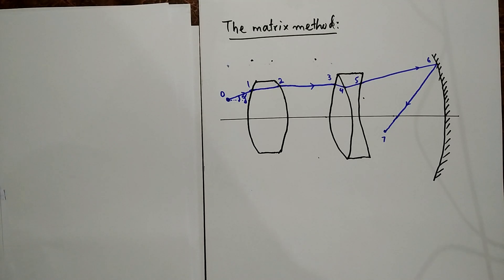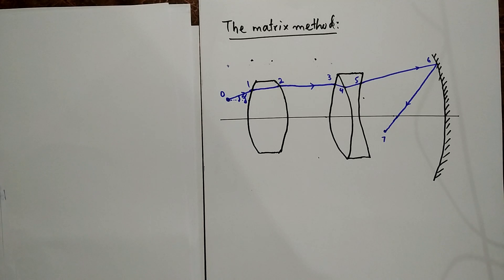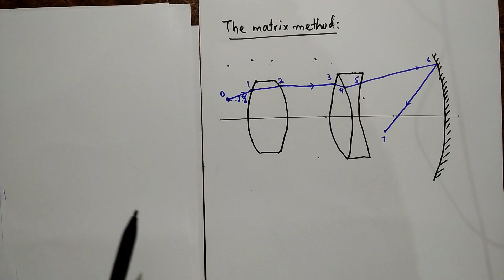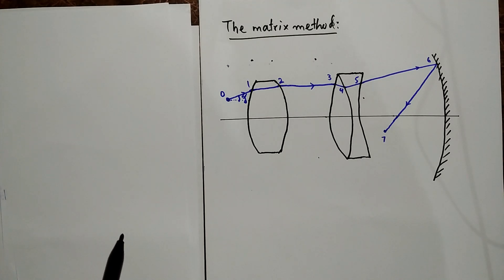Today our lecture is the matrix method. When the optical system consists of several elements — for example, four or five lenses that constitute a photographic lens — we need a systematic approach that facilitates analysis. As long as we restrict our analysis to paraxial rays, this systematic approach is well handled by the matrix method. We present the treatment of image formation that employs matrices to describe changes in the height and angle of a ray. In the paraxial approximation, changes in height and direction of a ray can be expressed by linear equations, which makes this matrix approach possible.